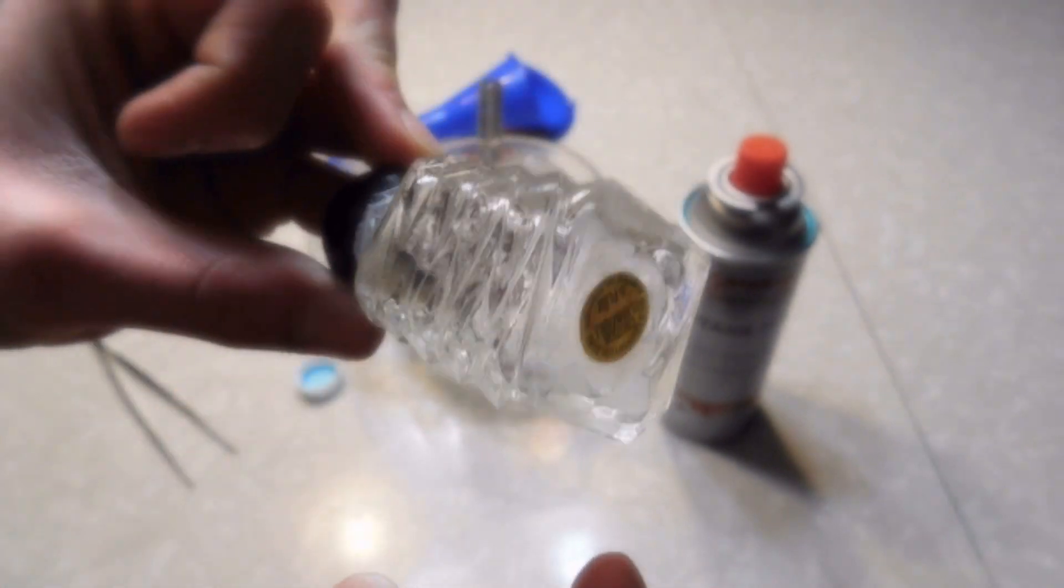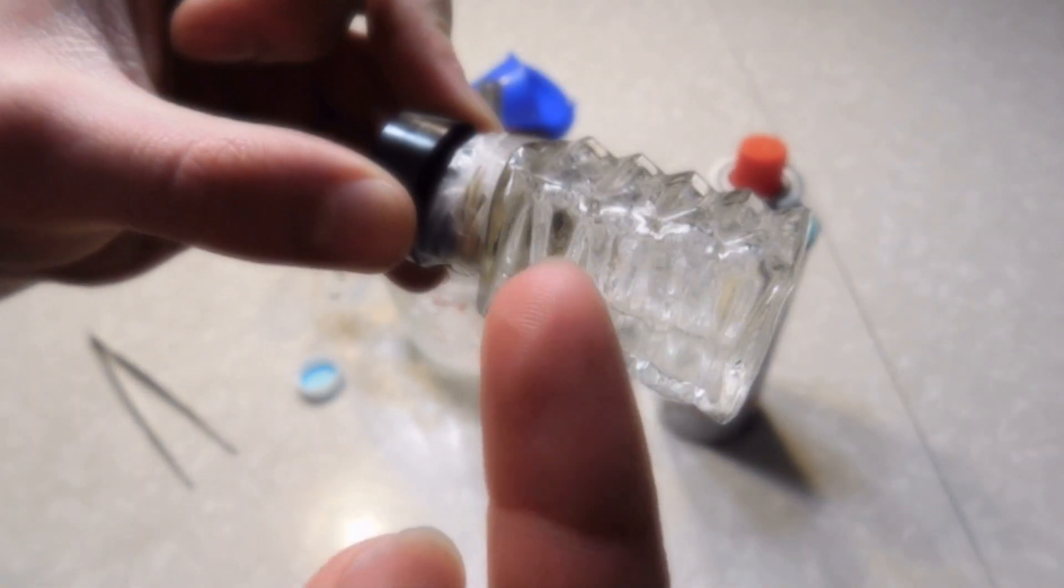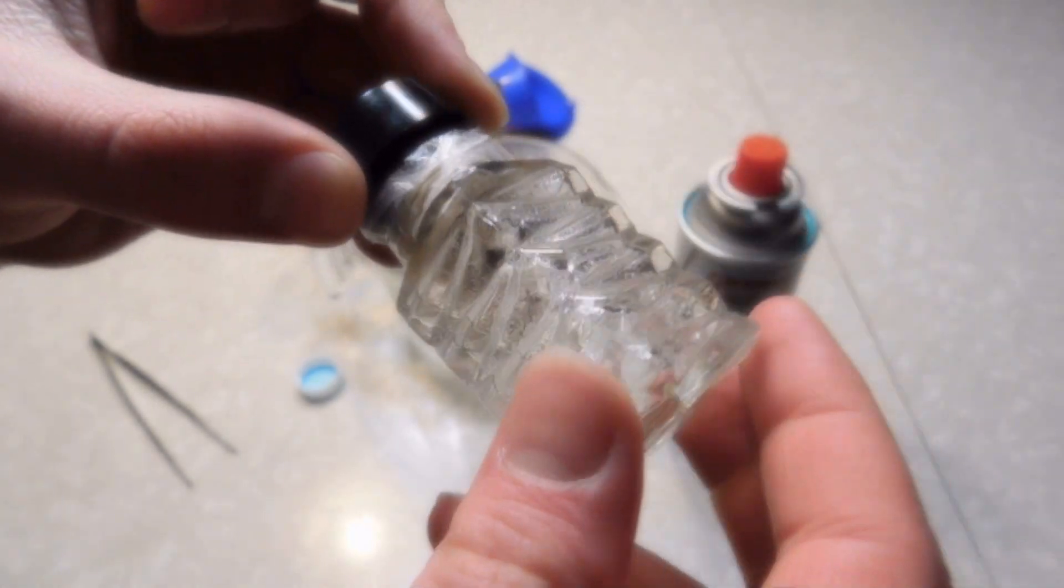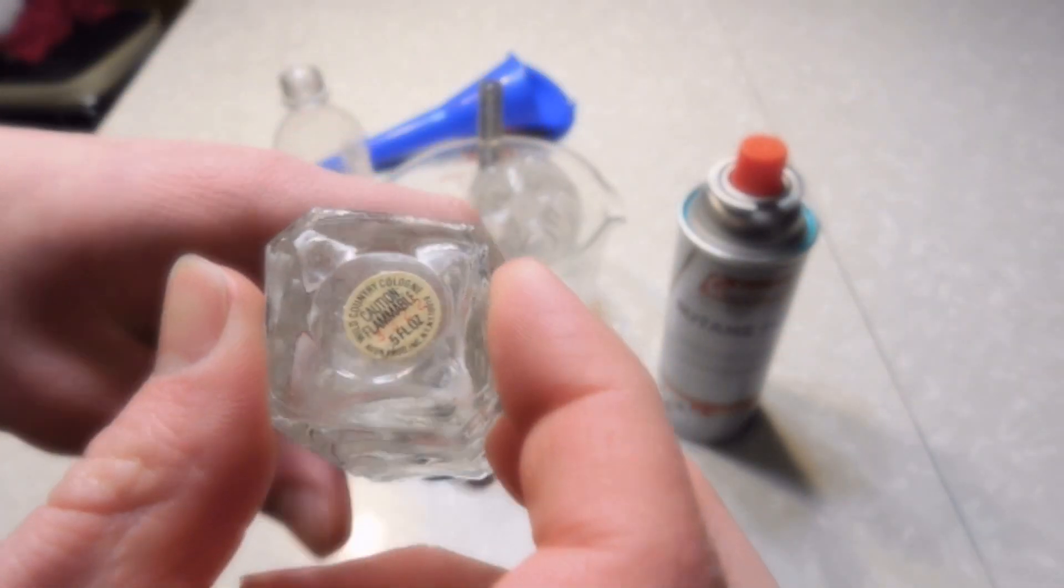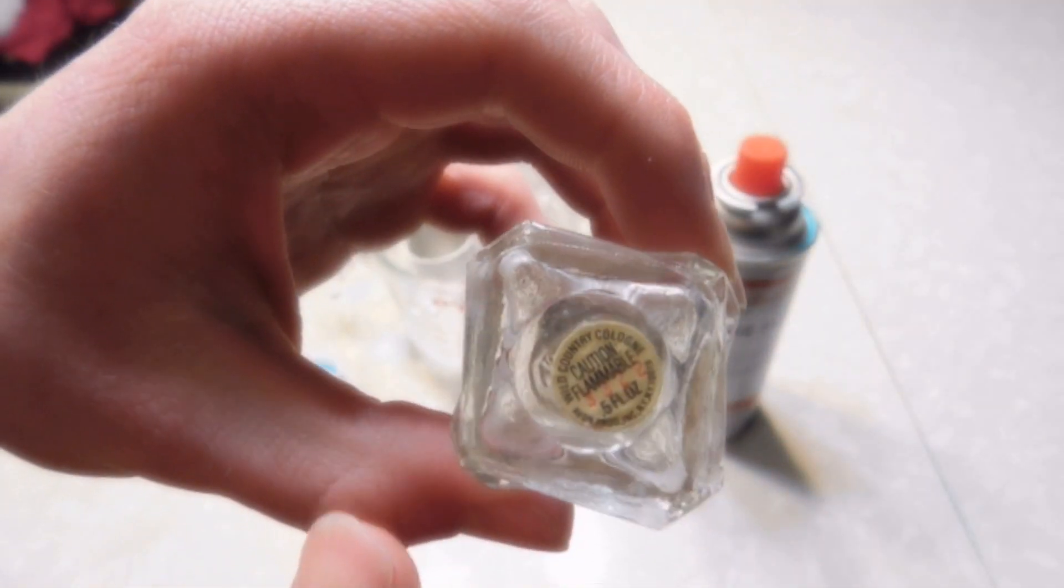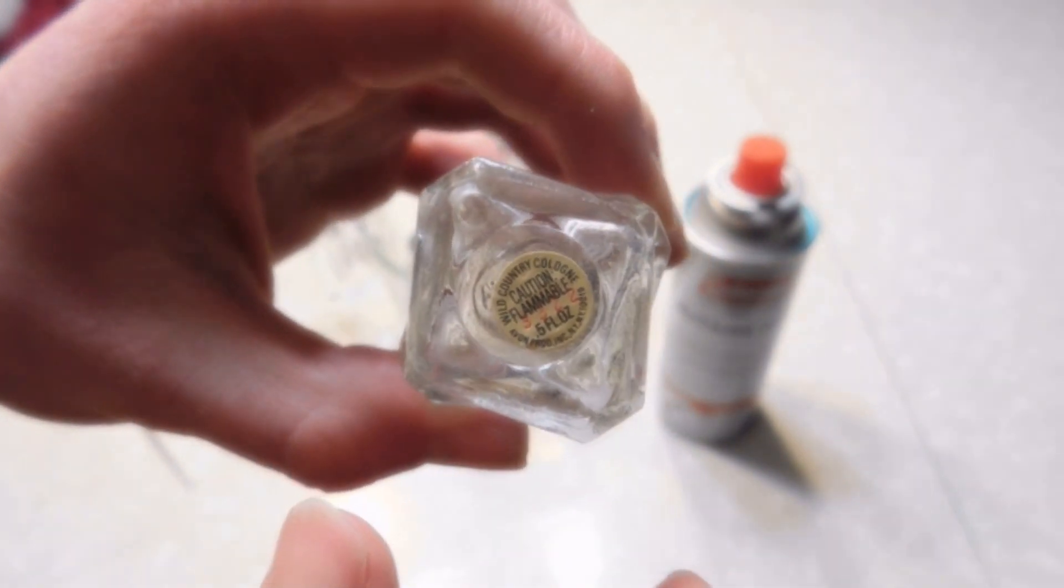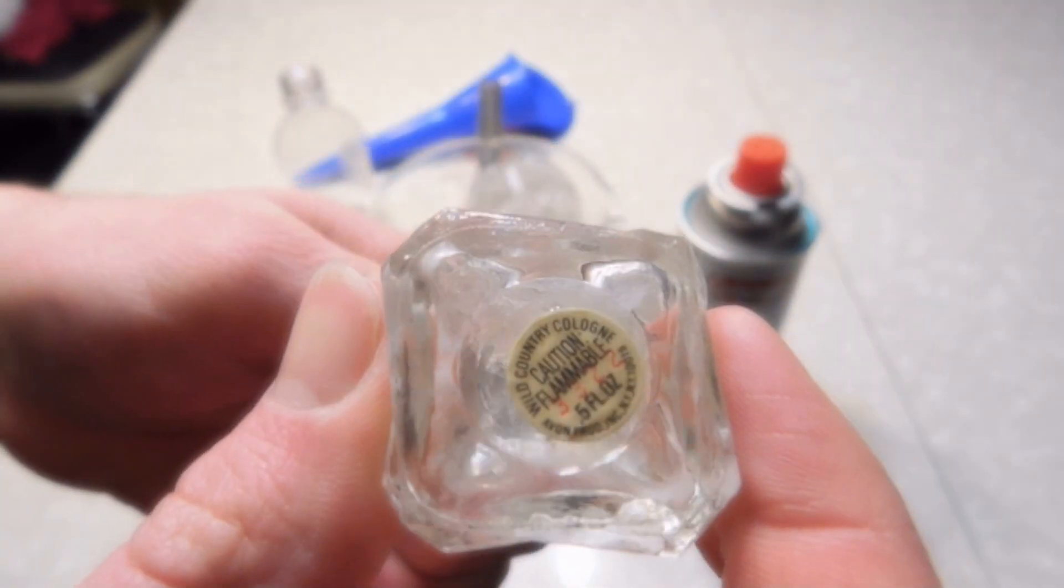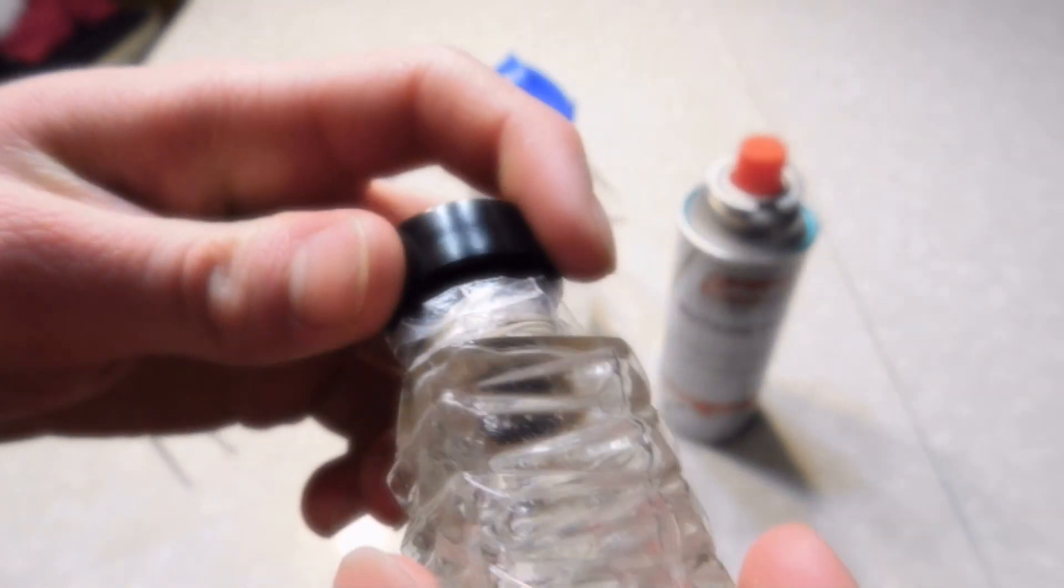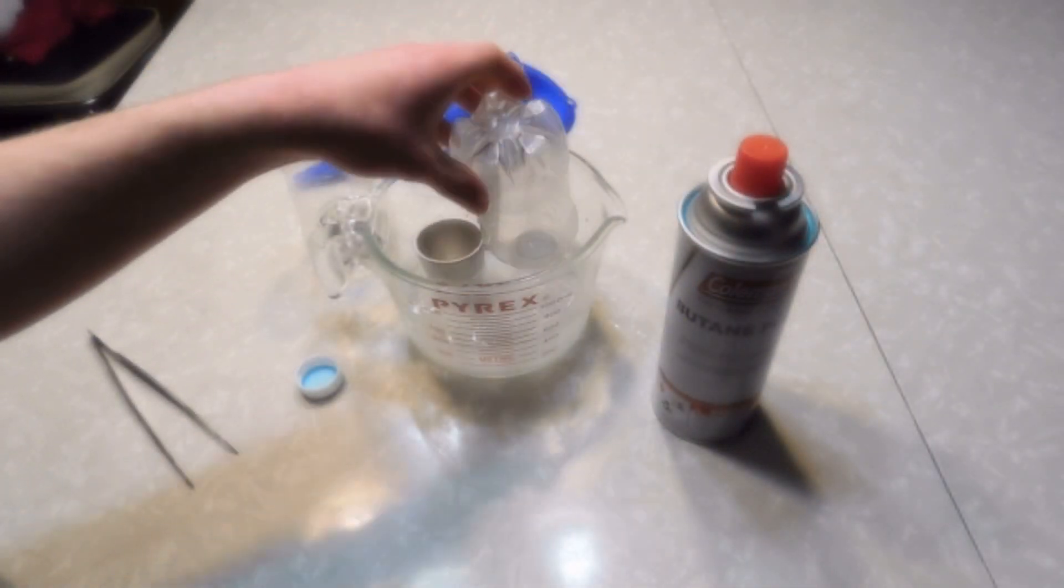In the case of this butane in this glass cologne bottle, this has been like this for two weeks or so. Nothing's leaked, which is pretty cool because whatever was in it before was flammable cologne, so it was designed to stop the leaks. You can do it with a soda bottle as well.